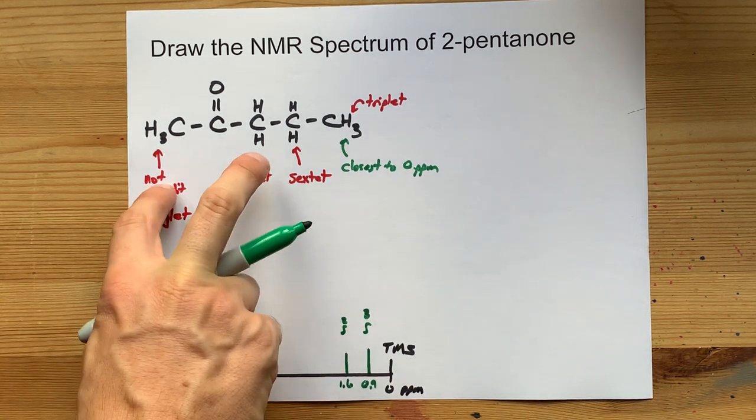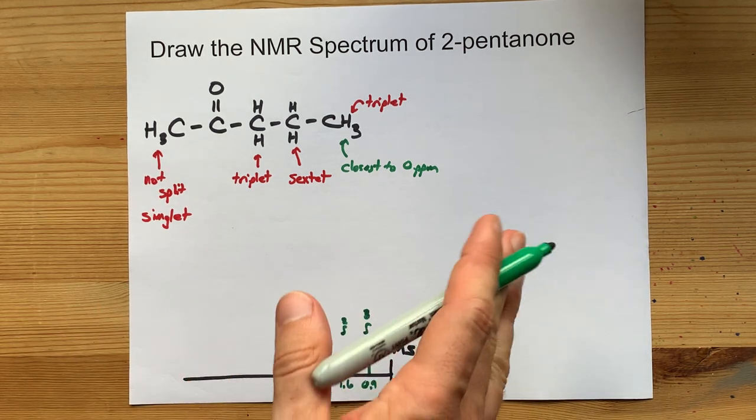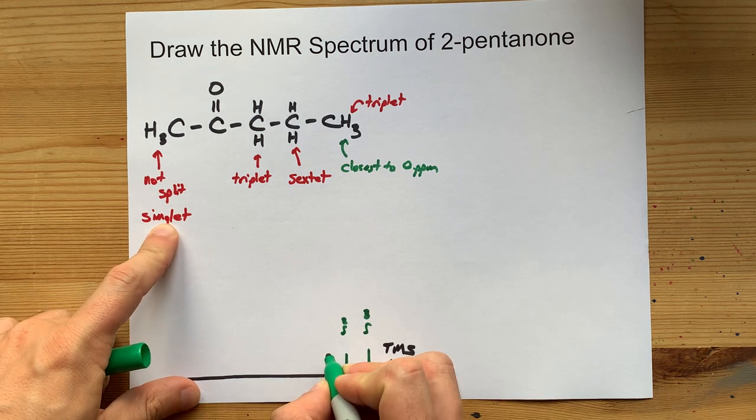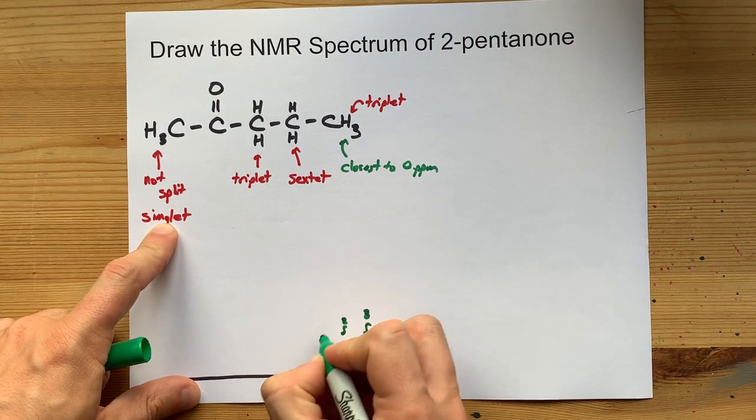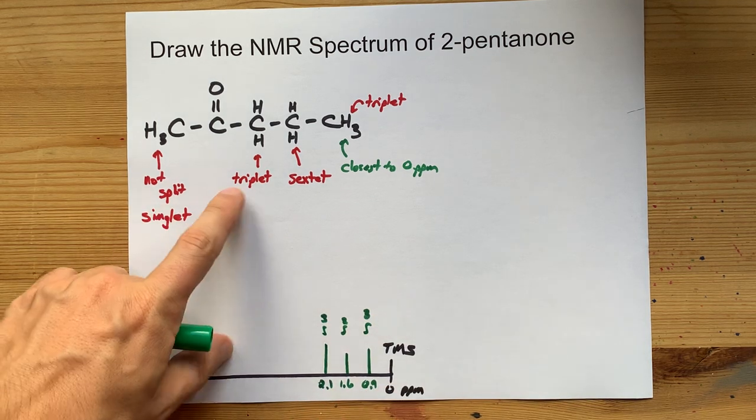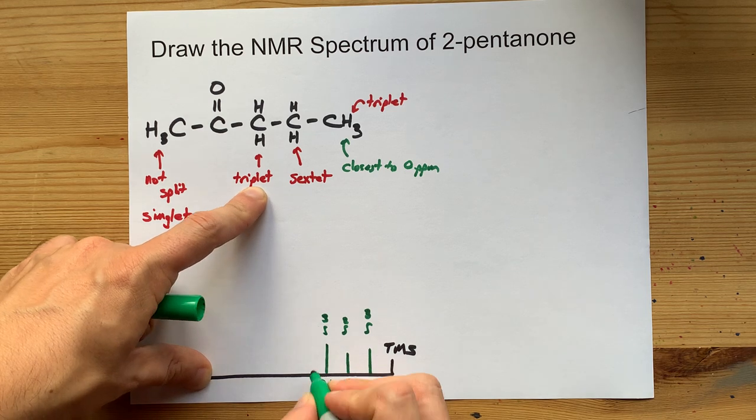And again, it's really tough to know which of these is going to be further away from zero. It turns out that these are next. These sit at about 2.1, and there are three of them. So I'll show an integrated area of 3 at 2.1. And then these two hydrogens are at 2.4.